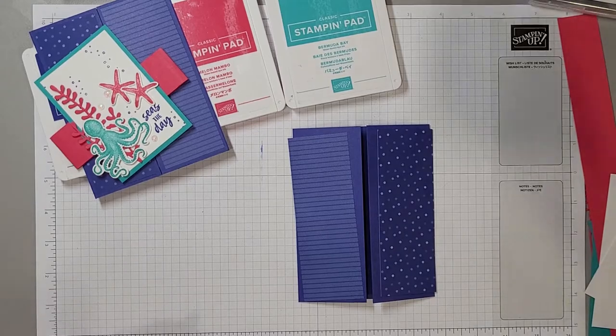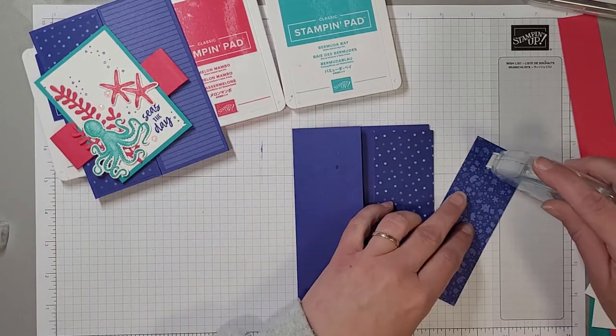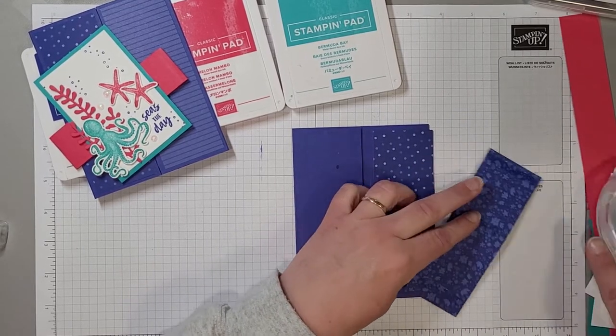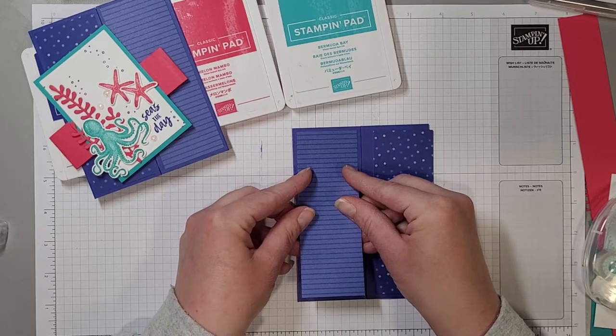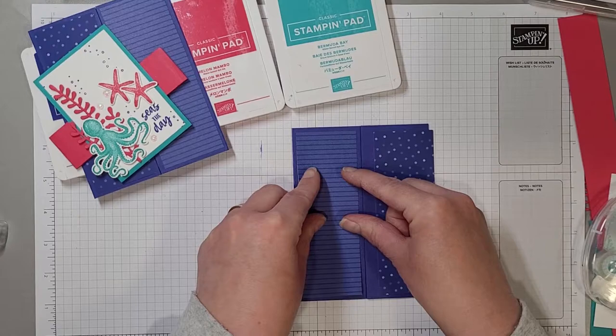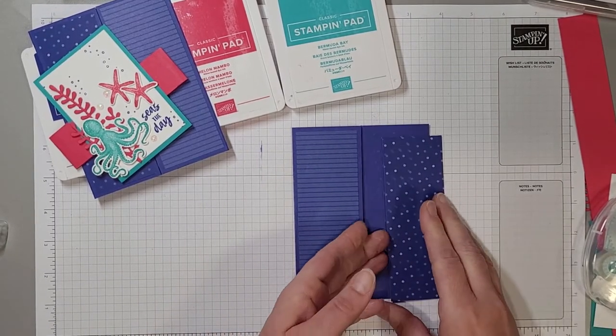So we can mix and match these however you want on the front of the card, and to attach them I'm just going to use my stamp and seal and put a little bit on the top, the bottom, and the center.